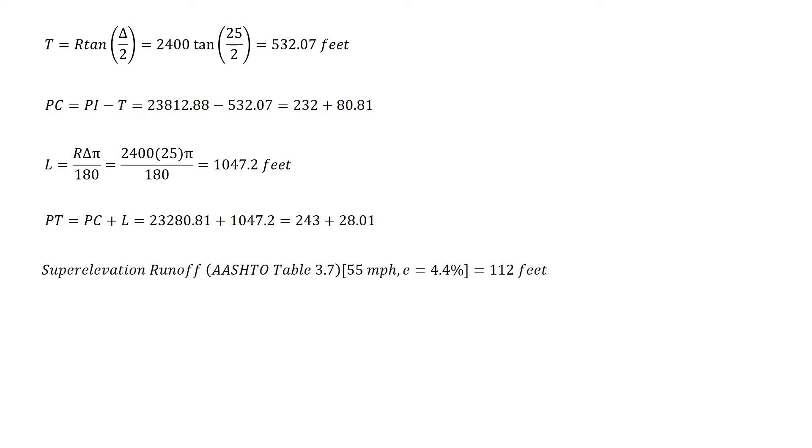We can look up the super elevation runoff from AASHTO table 3.7 for a 55 mile per hour design speed and a super elevation of 4.4%, which is going to give us a super elevation runoff of 112 feet.